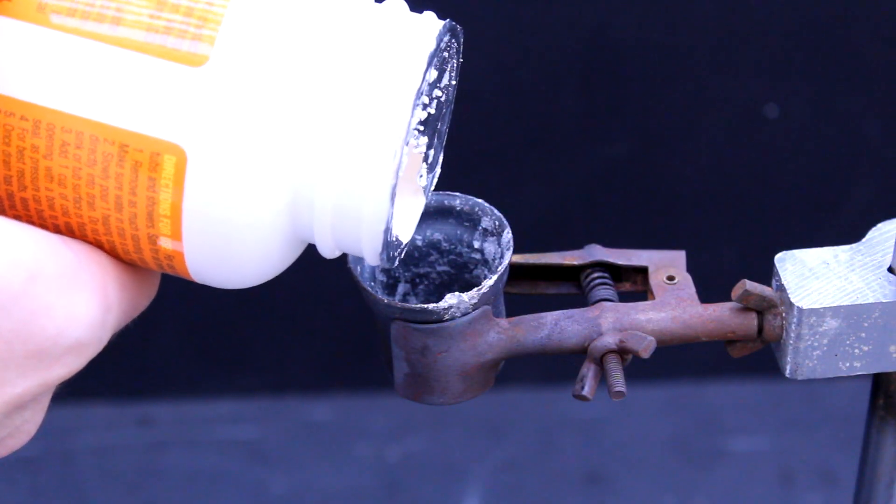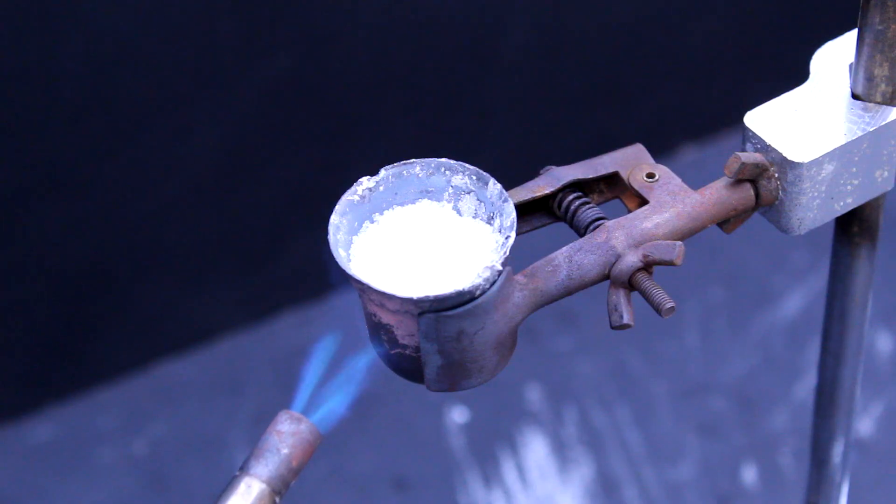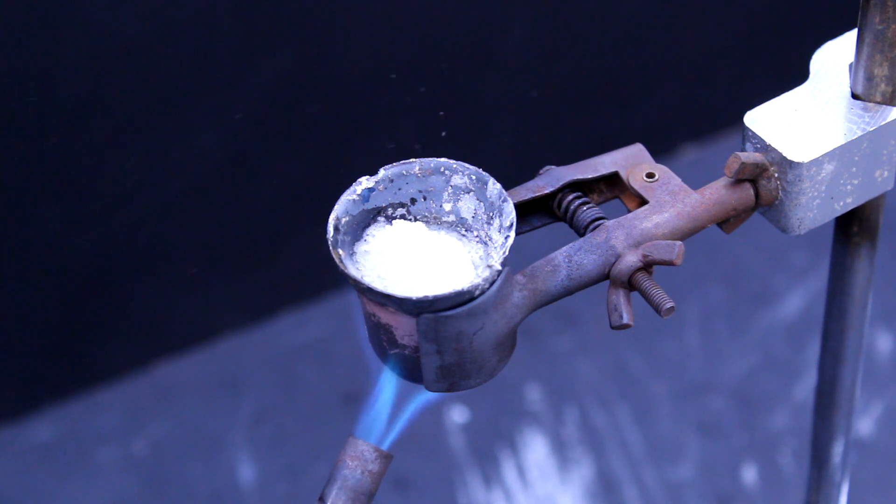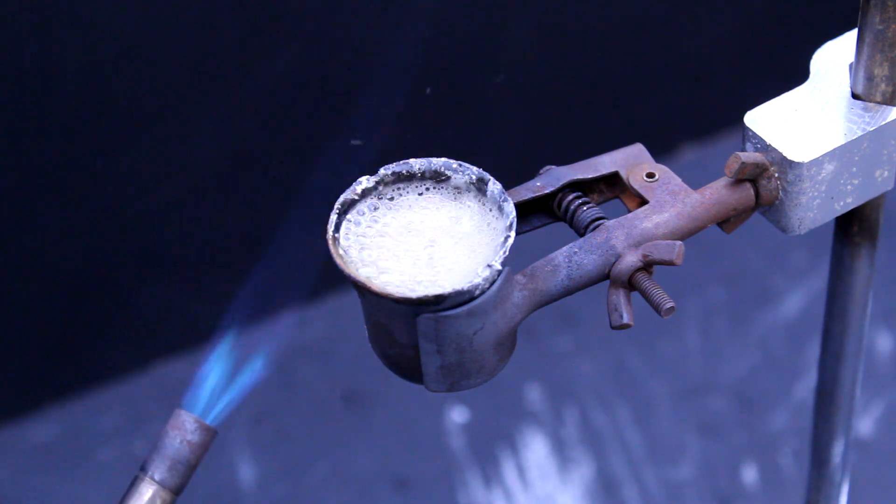To start, we will add an arbitrary amount of sodium hydroxide to the steel vessel. This is then heated with the torch until it melts. You can melt sodium hydroxide on a stovetop, but a torch is obviously much faster.